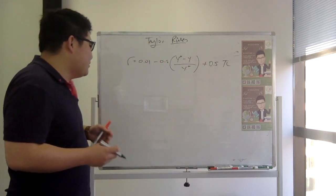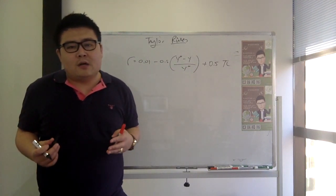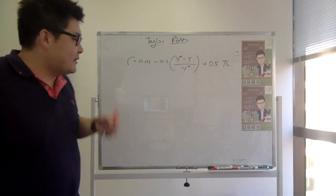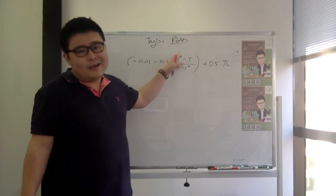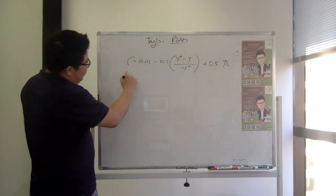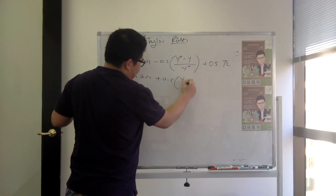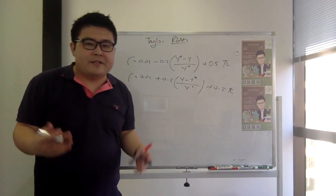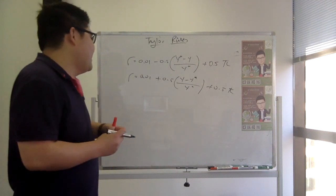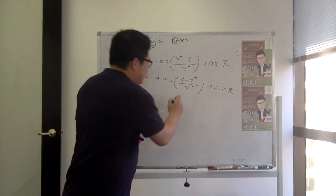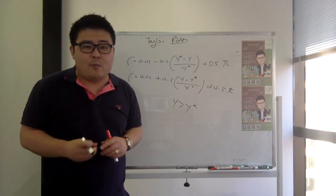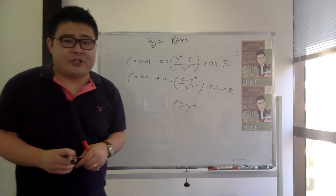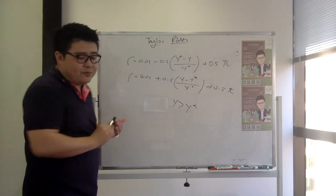So Taylor's rule is effectively about the relative importance the RBA places on the output gap versus inflation. One thing to be careful of is the negative sign — it's because we have Y-star take away Y. You can also write it as R equals 0.01 plus 0.5Y-star plus 0.5pi. Either way works, but I personally prefer the second form: if Y is bigger than Y-star, this means we have an expansionary output gap, which will tend to increase the interest rate to curtail inflationary pressure.